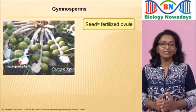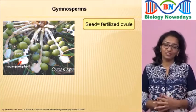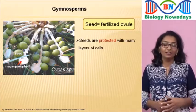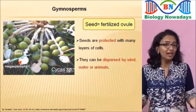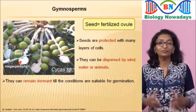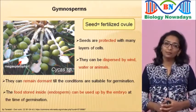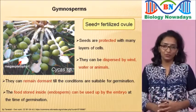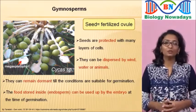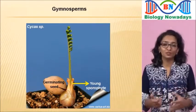All these changes that occur after fertilization make the ovule turn into a seed. So a seed is basically a fertilized ovule. Seeds have many advantages — they are protected with many layers of cells, they can be dispersed by wind, water or animals, and they can remain dormant until conditions are suitable for germination. The endosperm stored inside can be used by the embryo at the time of germination. When conditions are favourable, the seed will germinate into a young diploid sporophyte, which is the main plant body of gymnosperms.